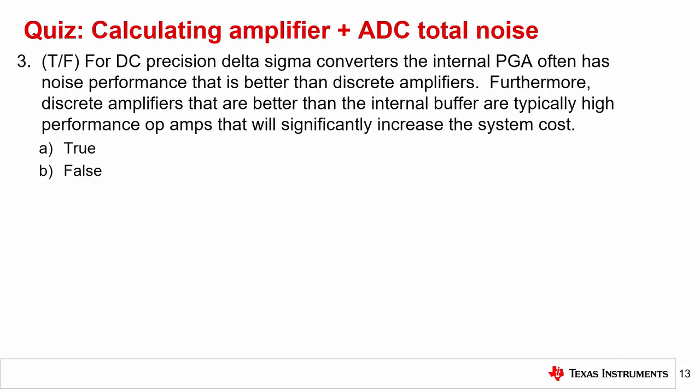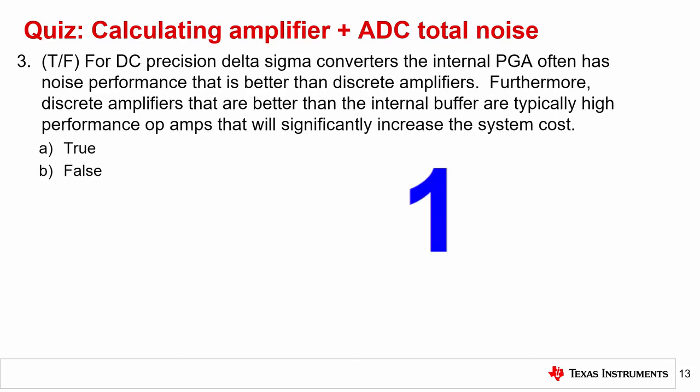Question 3, true or false. For DC precision delta sigma converters, the internal PGA often has noise performance that is better than discrete amplifiers. Furthermore, discrete amplifiers that are better than the internal buffer are typically high-performance op-amps that will significantly increase the system cost. The answer is A, true.